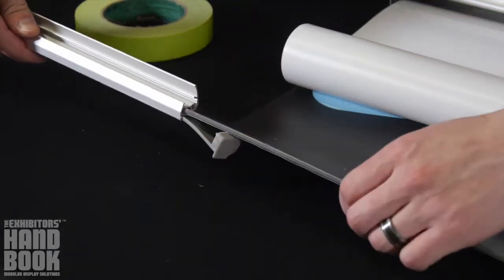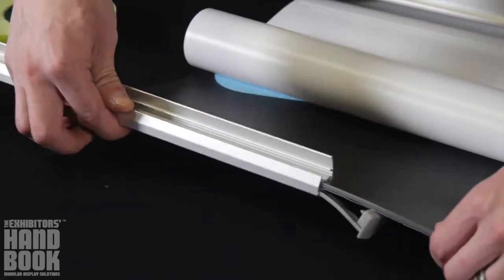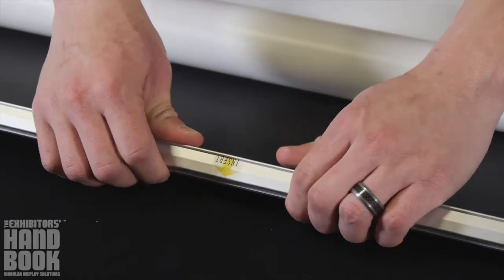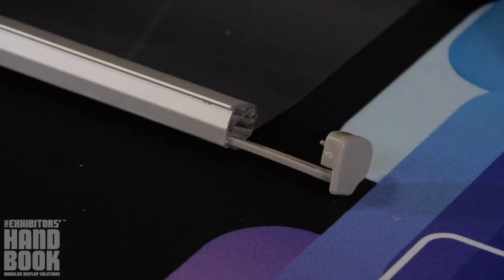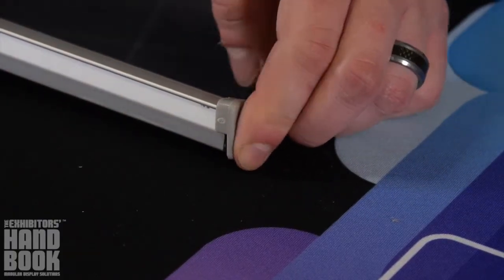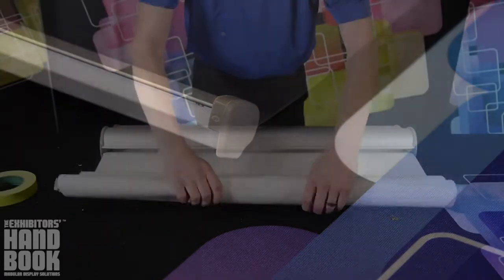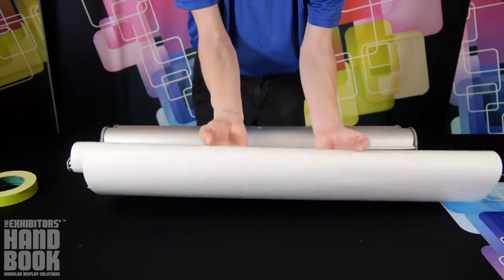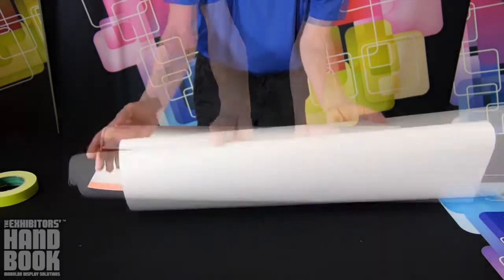Next, slide the graphic into the top rail, snap closed, and re-insert your end caps. Re-roll your graphic so that the top rail is in the center and flip the graphic over.